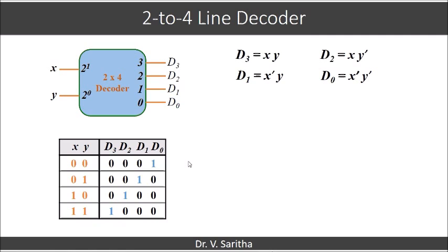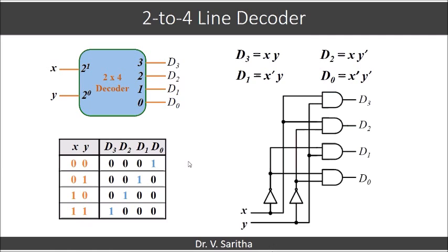Now we can draw the logic diagram using these four expressions of d naught, d1, d2 and d3 and we get the logic diagram like this. If you see in this you are having the outputs using AND gates actually.